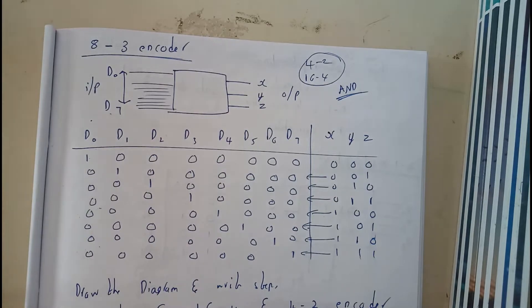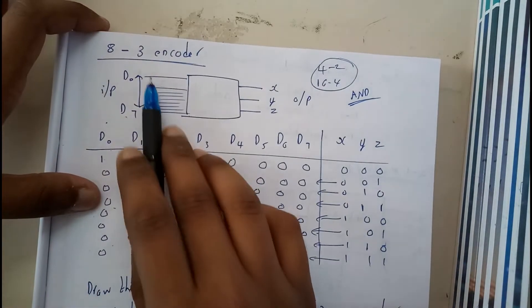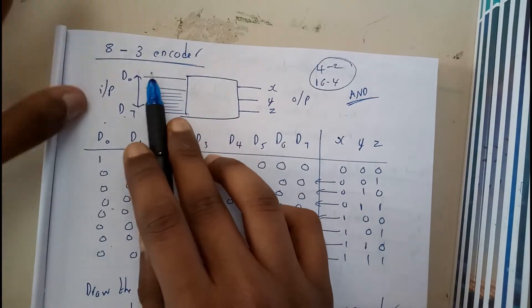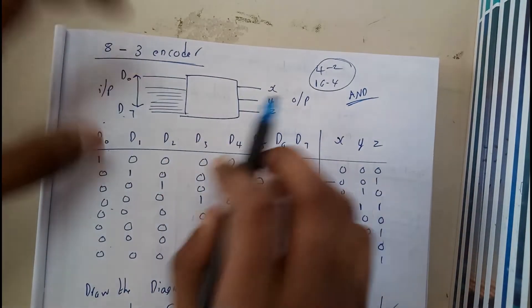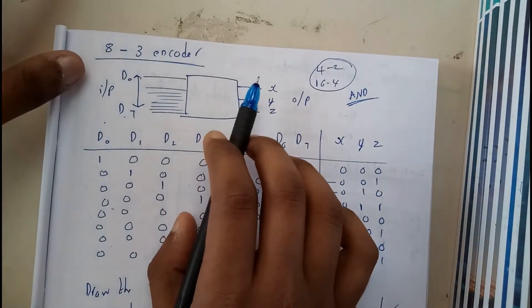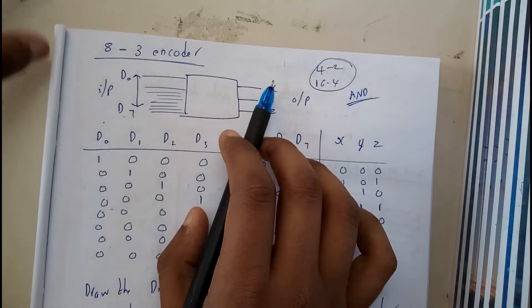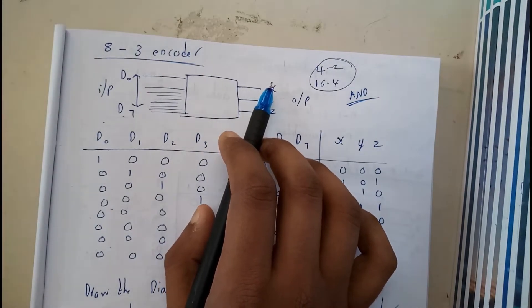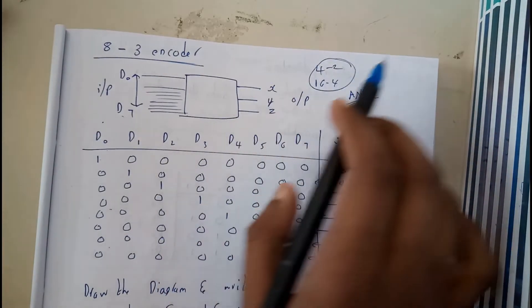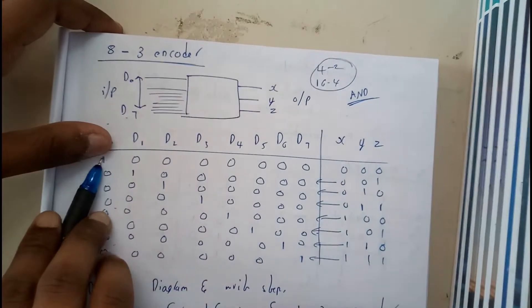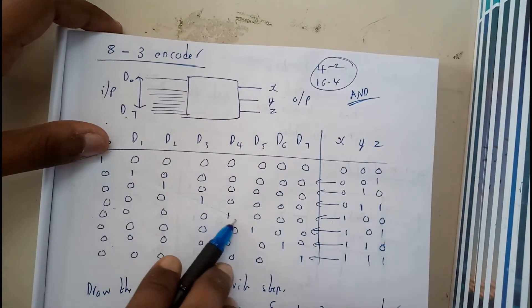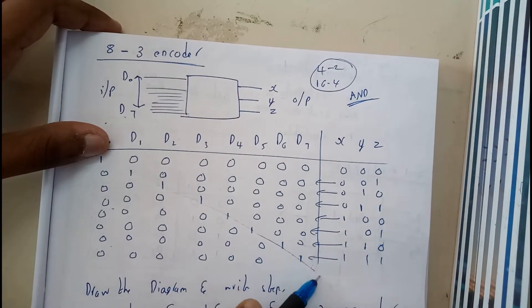So basically, an 8-to-3 encoder will be having 8 inputs and 3 outputs, right? This is also similar to the decoder. In decoder, we used to have diagonal ones, right? Similarly, we will be having diagonal ones.